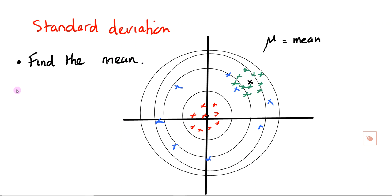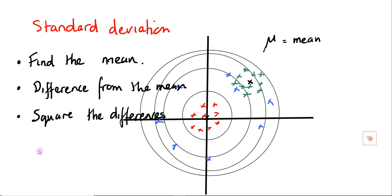First of all, we found the mean of the data. Then? We find the difference, the data point and the difference. We find the difference from the mean. Then we square the difference. And then the mean of the square of the differences.